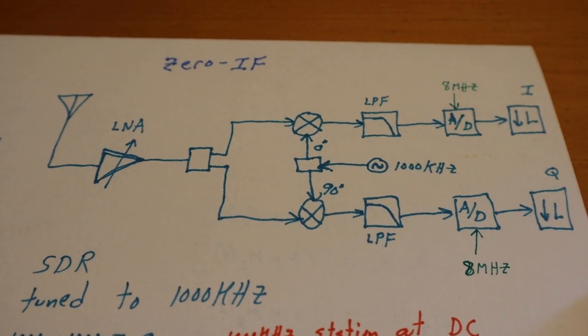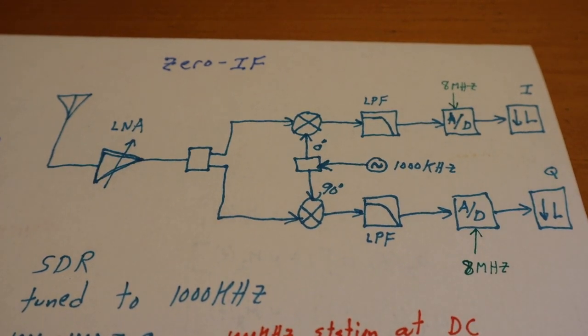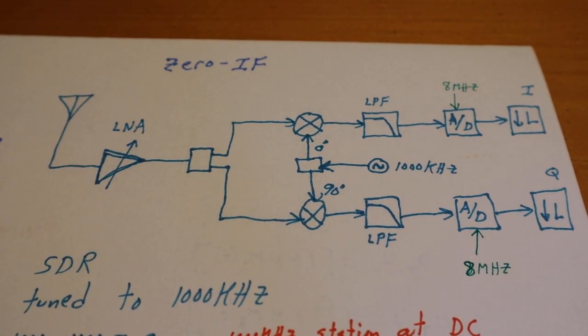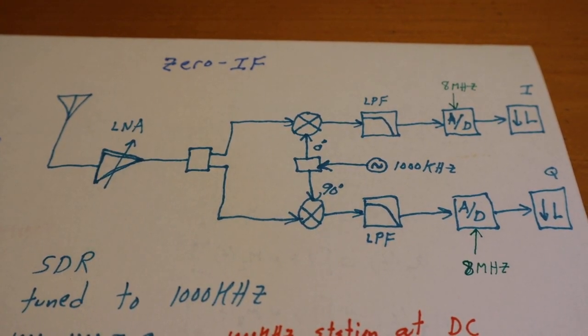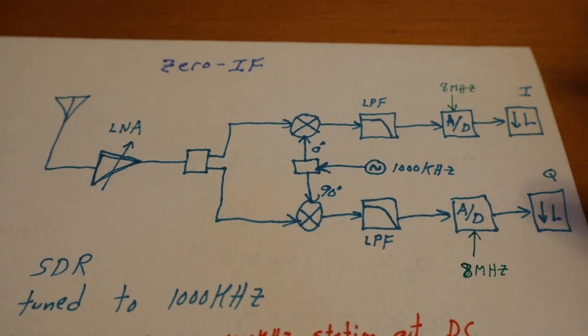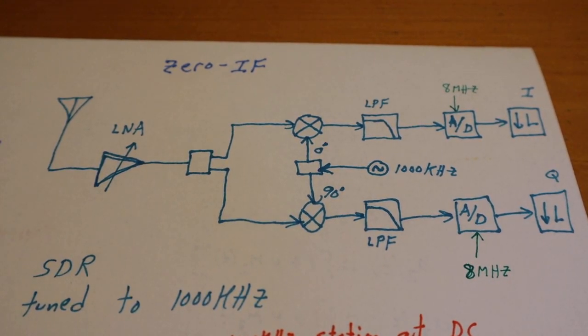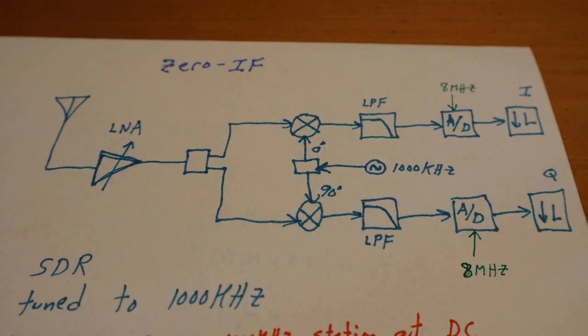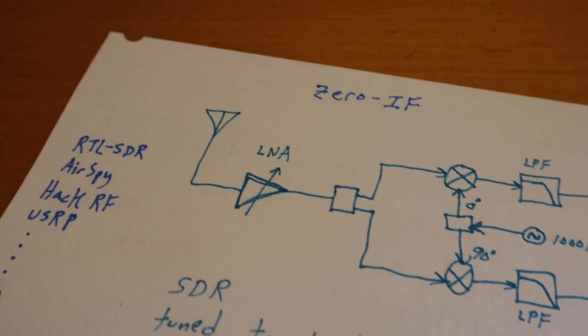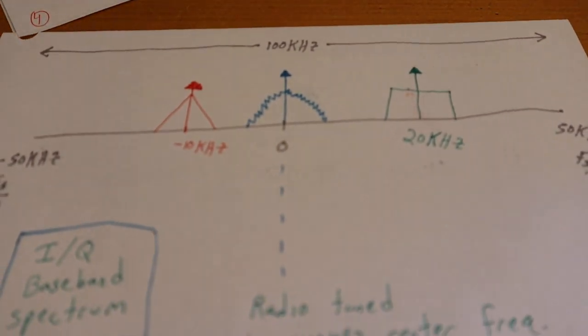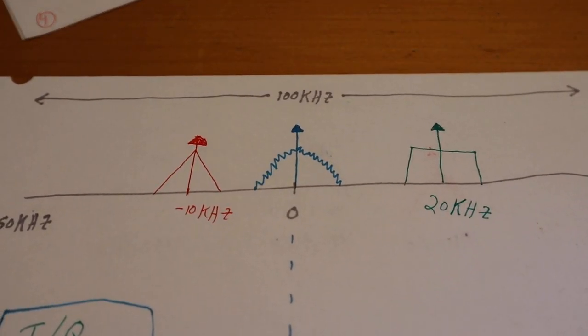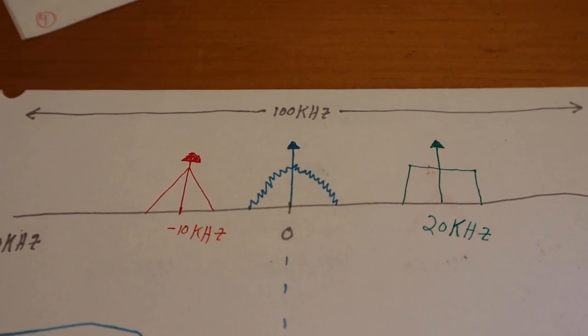But this is the architecture of most software defined radios—your RTLs, HackRFs—they're all using this. At the end of the day, you got IQ data here that's streaming into the software for processing. So I just wanted to go through the example with you guys to show you how three radio stations get beat down. So these are the frequencies that are really streaming into your software radio.